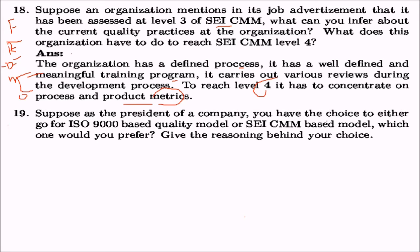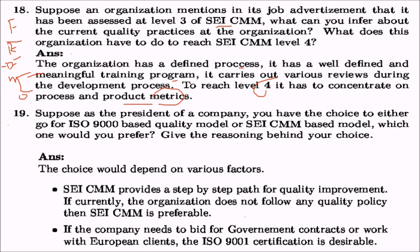Suppose as the president of a company you have the choice between an ISO 9000 based quality model and SEI-CMM based model — which would you prefer? The choice depends on various factors. SEI-CMM provides a step-by-step path for quality improvement, so if your organization does not follow any quality policy, SEI-CMM is preferable. But if the company needs to bid for government contracts or work with European clients, ISO 9000 certification is desirable. SEI-CMM is internal to your company, while ISO 9000 gives global recognition.